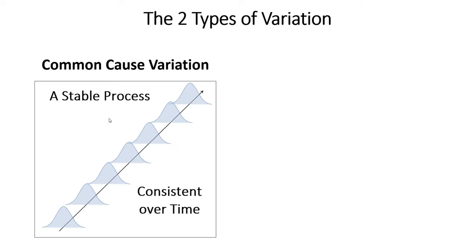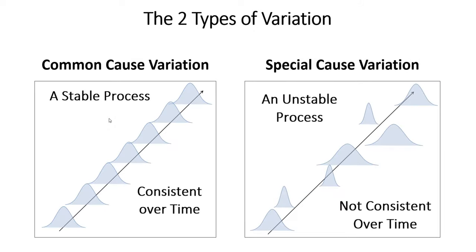So the two types of variation. Every process, no matter what we're talking about, has two types of variation. The first is common cause variation. This is the inherent, normal, random variation associated with your process that every process experiences when it's in control. And I'm talking about every type of process — a manufacturing process, an administrative process, maybe a healthcare process. It doesn't matter what it is. Every process has some random, normal, common variation associated with it.